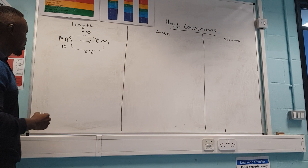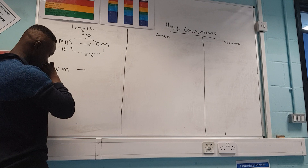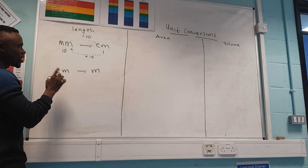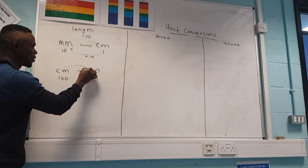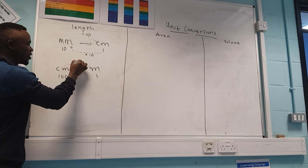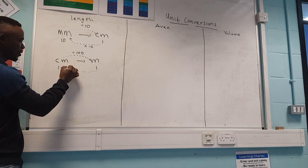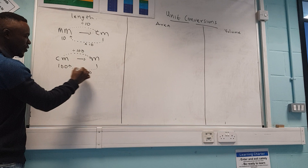Next, centimeters to meters. Every hundred centimeters gives you one meter. So if you're moving from centimeters to meters, the number is smaller, so you divide by 100. If you're moving from meters to centimeters, you multiply by 100 because you want a bigger answer.